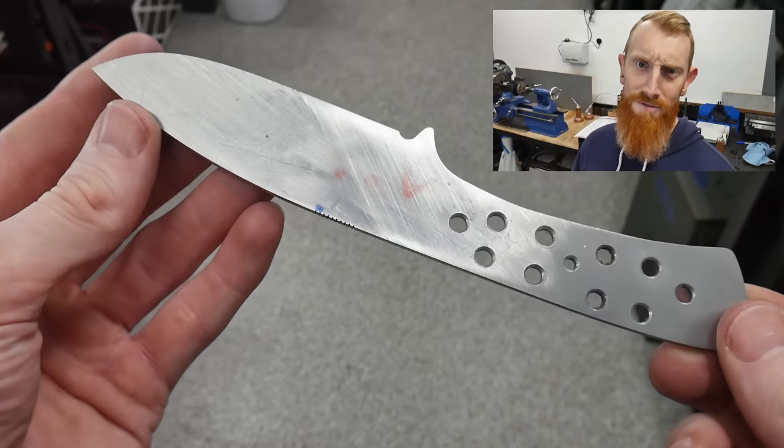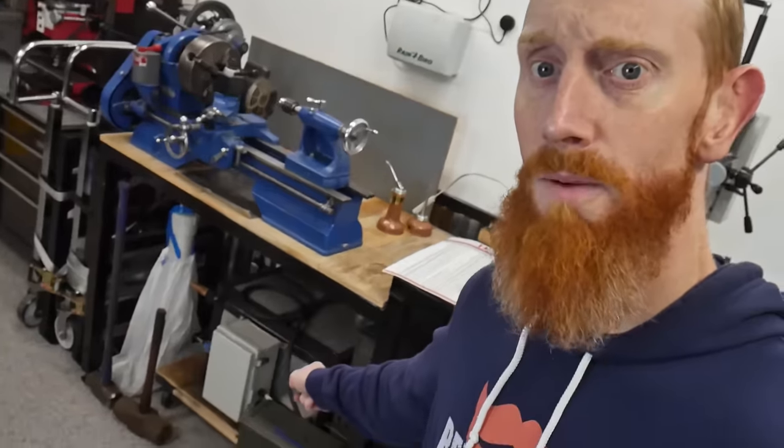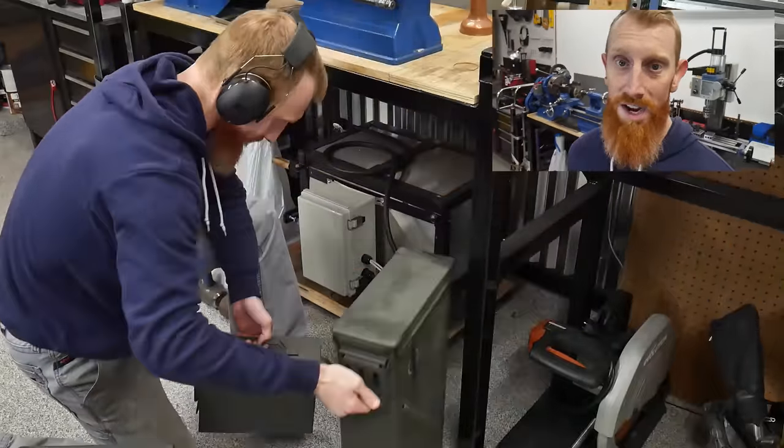The next step with this knife is going to be to heat treat it. Now normally I would use my DIY heat treating oven that we built recently, however I do not have a 220 outlet in this garage yet. My breaker box behind me is pretty full, so I may actually need to get an electrician out. In this case, we're going to be using the forge just like we used to.